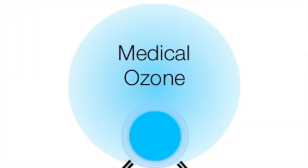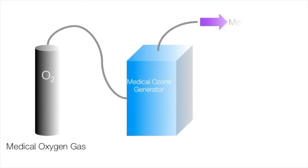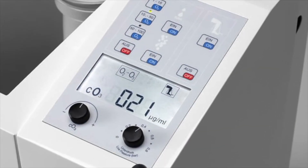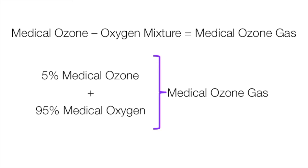Medical ozone is made by using medical oxygen gas as its source and using a specialized, calibrated generator that breaks apart the medical oxygen so it can reform to make a medical ozone-oxygen mixture.